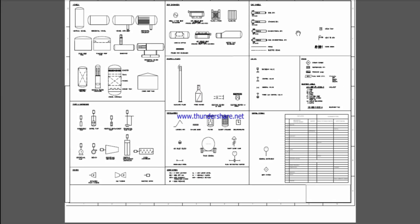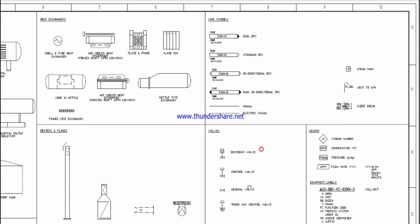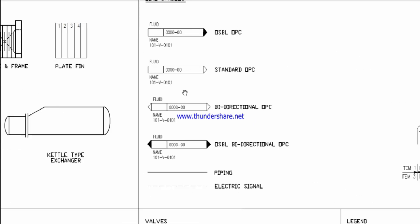The first P&ID in the project should contain a legend defining all symbols used. If certain symbols are defined elsewhere, it may be appropriate to only refer their source.